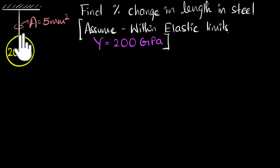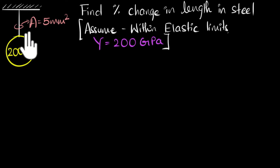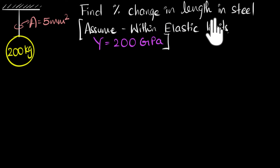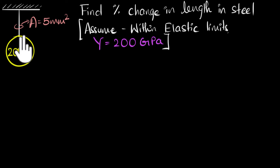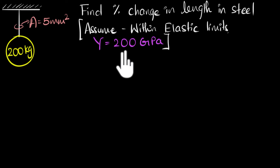We have a steel wire of cross-sectional area five millimeter square, and we are hanging a 200 kilogram object from that. We are asked to calculate the percentage change in length of the steel wire. We are asked to assume that we are within the elastic limits and the Young's modulus is given to us: 200 gigapascals.